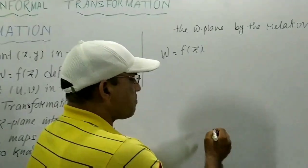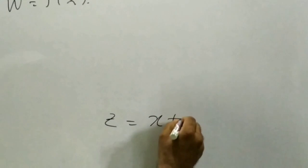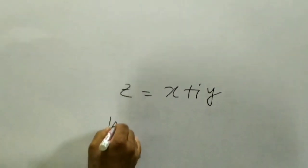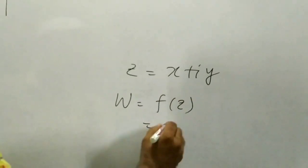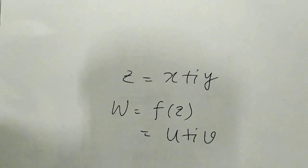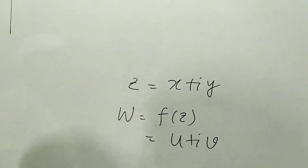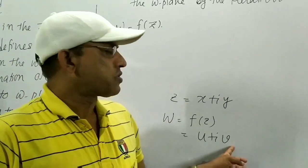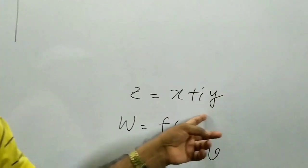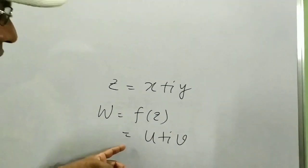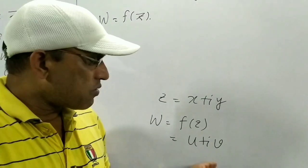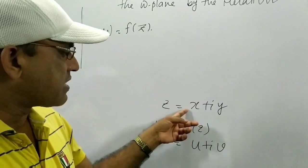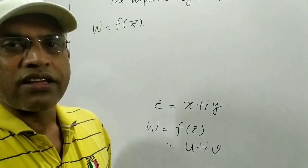We know that in the case of z, z equals x plus iy in complex numbers. And w equals f(z), where f(z) equals u plus iv. Suppose one figure is given in the z-plane — what will be the corresponding figure in the w-plane? We shall discuss this type of problem.